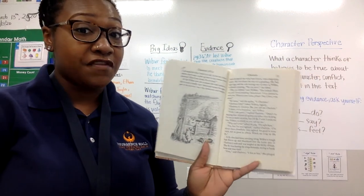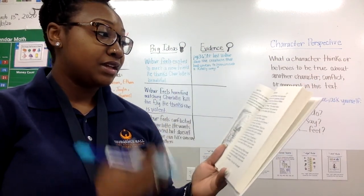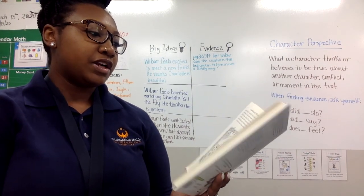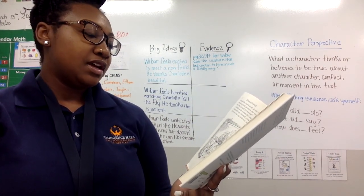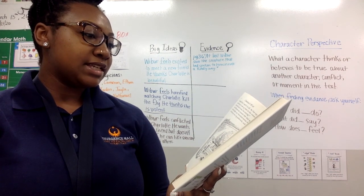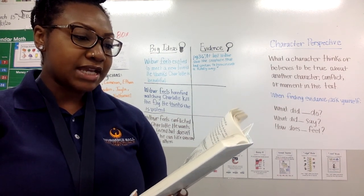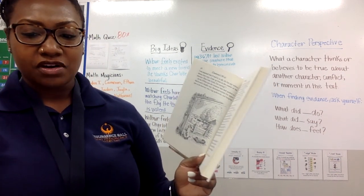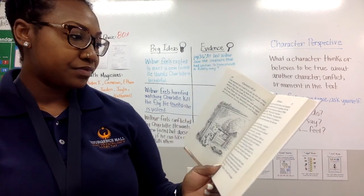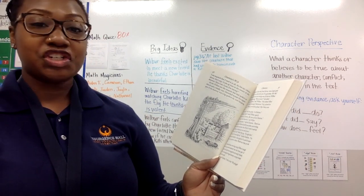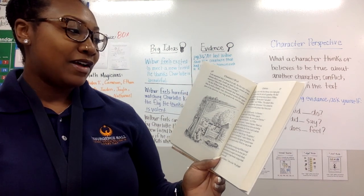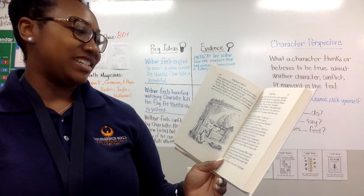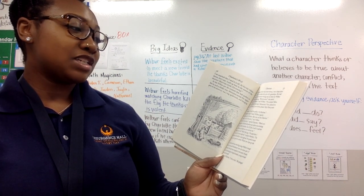She was about the size of a gumdrop. She had eight legs and she was waving one of them at Wilbur in a friendly greeting. 'See me now?' she asked. 'Oh, yes, indeed,' said Wilbur. 'Yes, indeed. How are you? Good morning. Salutations. Very pleased to meet you. What is your name, please? May I have your name?' 'My name,' said the spider, 'is Charlotte.' 'Charlotte what?' said Wilbur eagerly. 'Charlotte A. Cavatica. But some just call me Charlotte.'